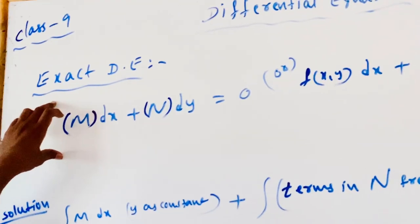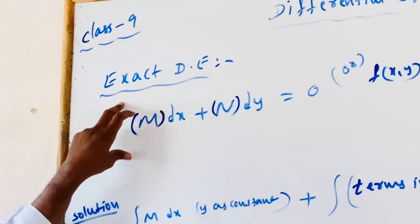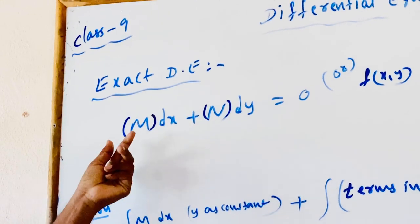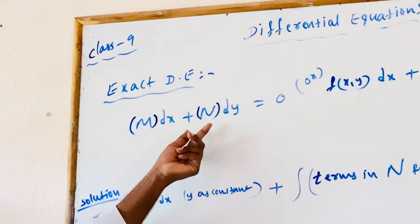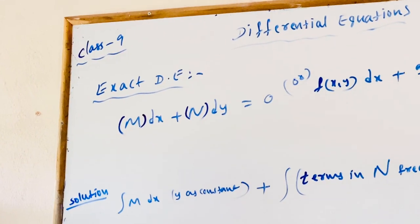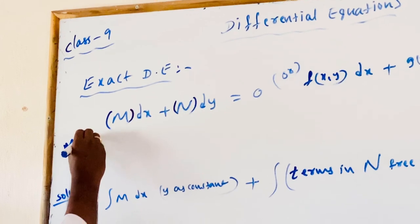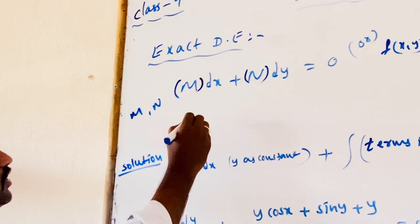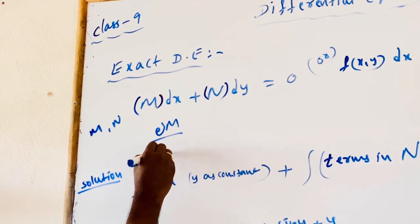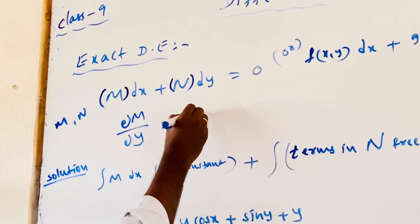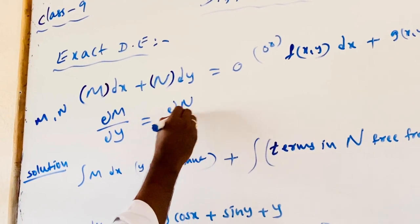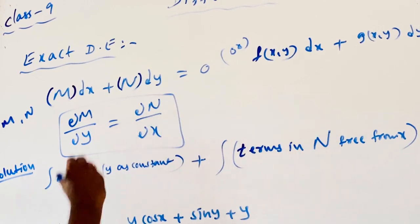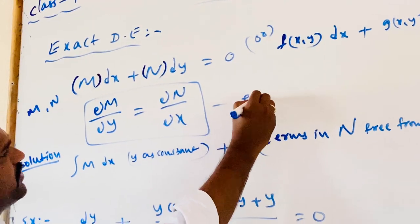How to identify and derive the exact differential equation? By separating the M and N terms from the given equation and finding whether ∂M/∂y equals ∂N/∂x — if so, it is said to be an exact differential equation.